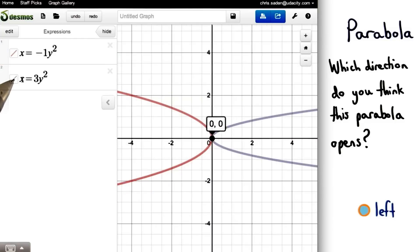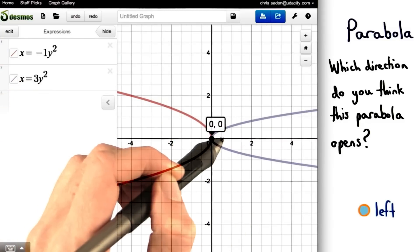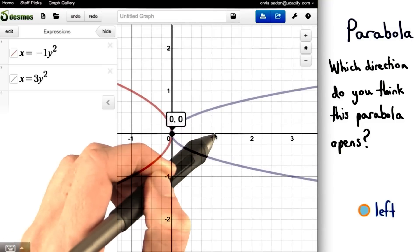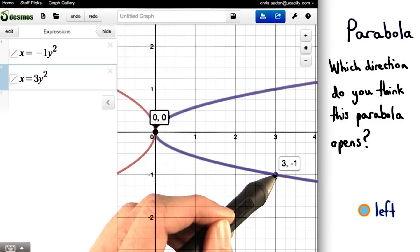Let's also see this with this graph, x equals 3y squared. If we zoom in on this purple parabola, we can see how to get these points of 3, 1 and 3, negative 1.